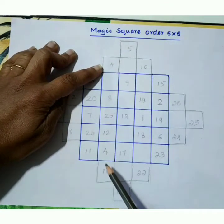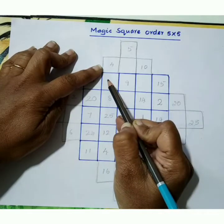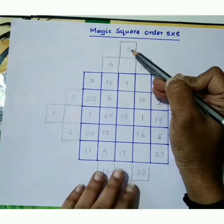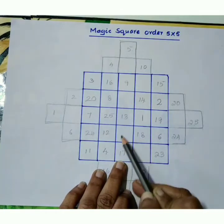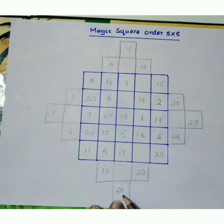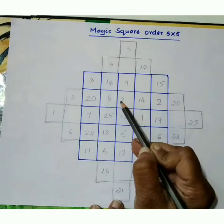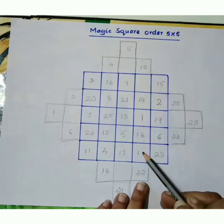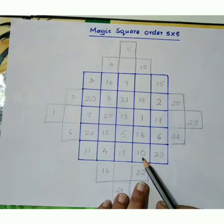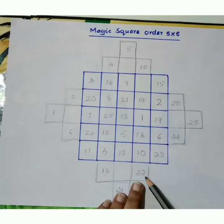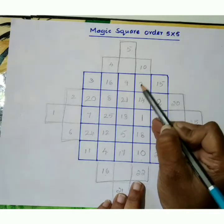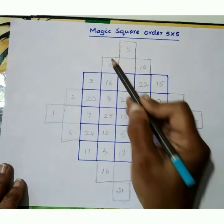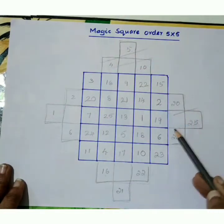Column wise also, we can do same. Shift the numbers which are outside the box. 18 shifted to here and 22 shifted to here. Now ignore what are the numbers outside the box. Erase it or remove it.